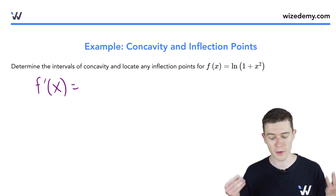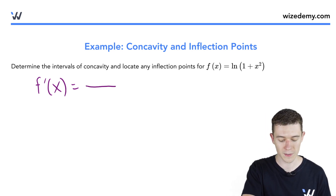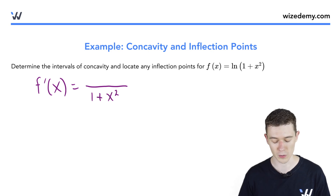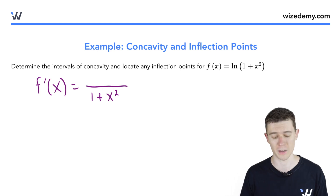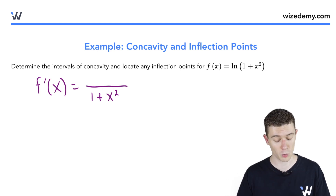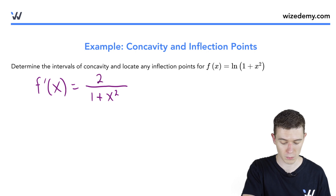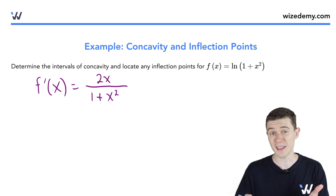The derivative of a natural log function — the rule is it's a fraction where the inside goes in the denominator: the 1 plus x squared goes downstairs, and its derivative goes on top by the chain rule. The derivative of 1 is 0, and the derivative of x squared is 2x. Now we need the second derivative.